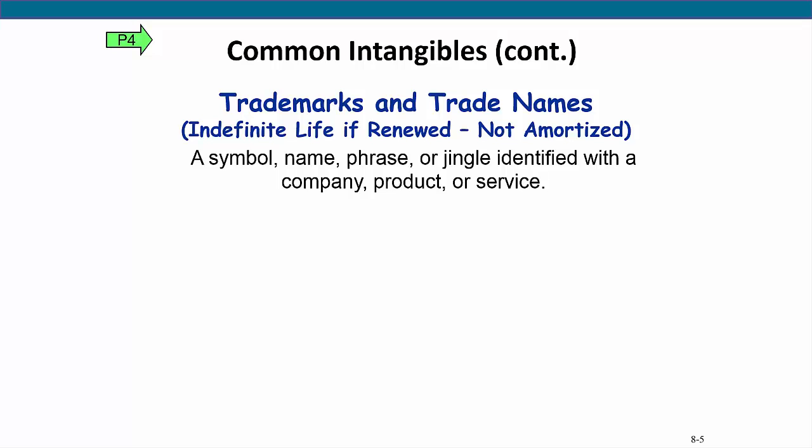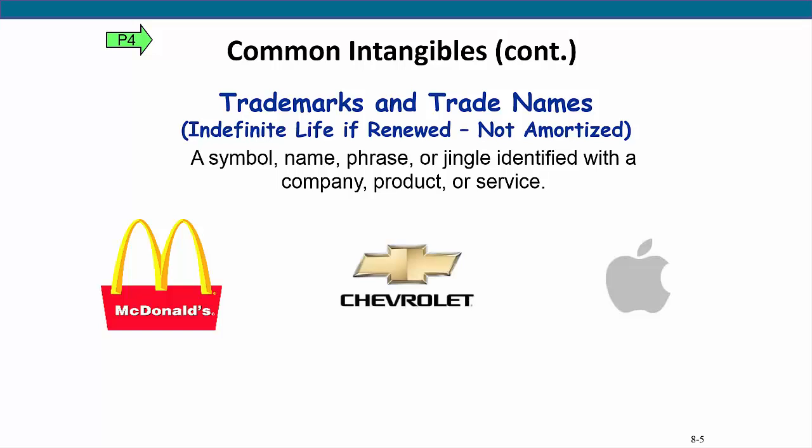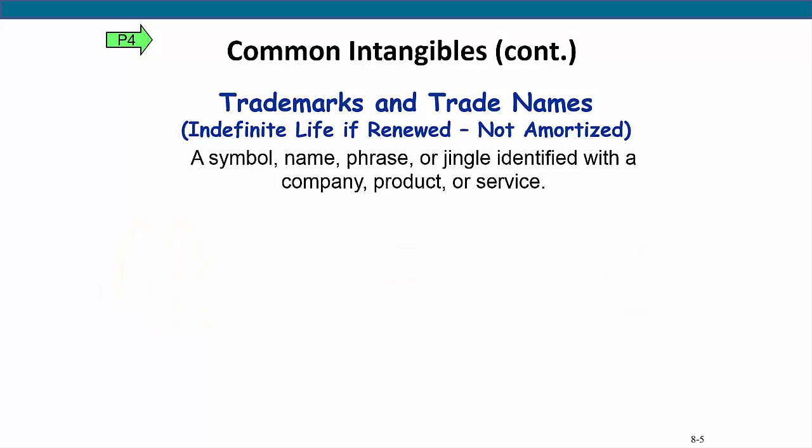A trademark or trade name is any symbol, name, phrase, or jingle that is identified with a company, product, or service. No other party may use the trademark or trade name without the permission of the holder. Many trademarks are extremely valuable. Think about some trade names and symbols you know: the McDonald's Golden Arches, the Chevrolet Bowtie Emblem, the Apple logo on the iPhone — all familiar examples of symbols that have been trademarked. Note that if the company owns the trademark and plans to renew it indefinitely, it will not amortize the cost associated with that trademark or trade name. Other intangibles include items such as software, non-compete covenants, and customer lists. The accounting for them is much the same as described above.